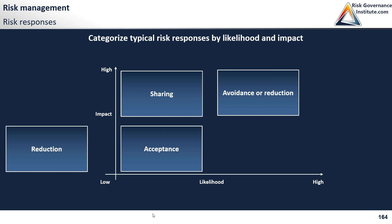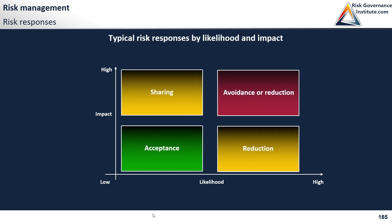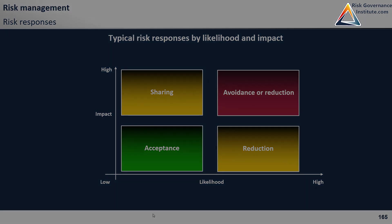And the last one: high likelihood, low impact. For example, petty theft in a company of a hundred thousand employees — unfortunately, it's probably going to happen relatively often. Or errors in accounting journal entries — that's probably going to happen relatively often too. And now we can color these: red is high risk, green is low, and orange is medium.